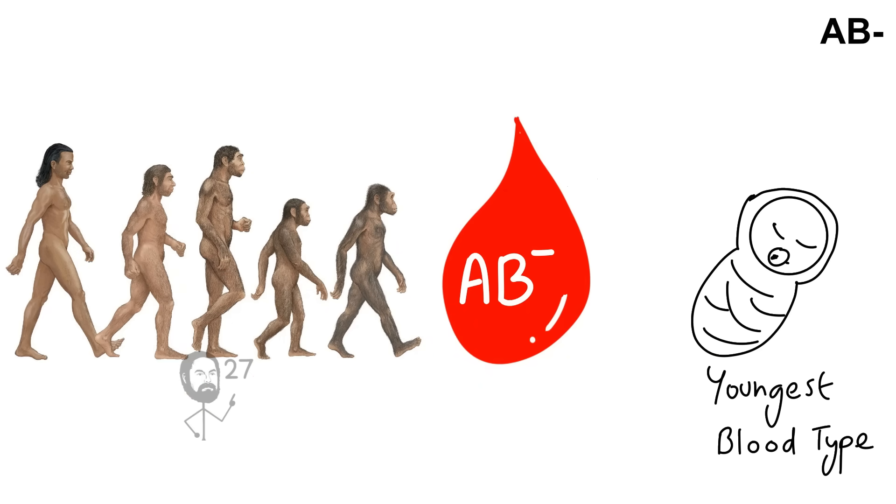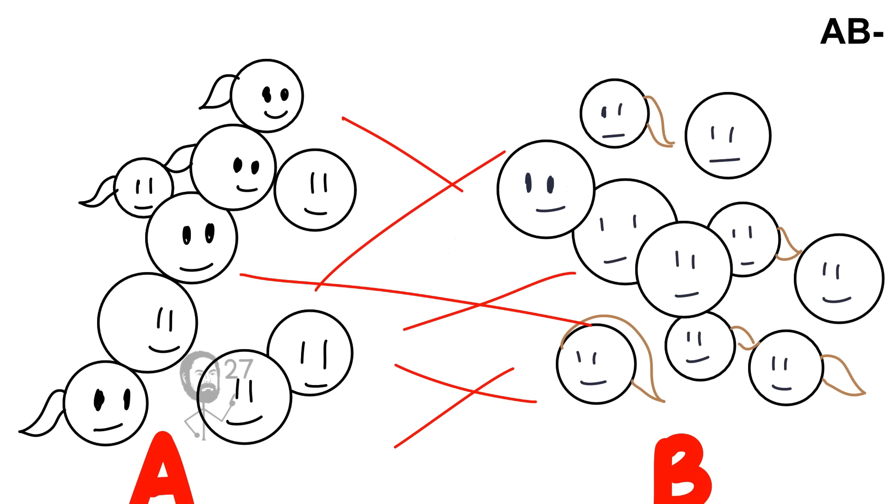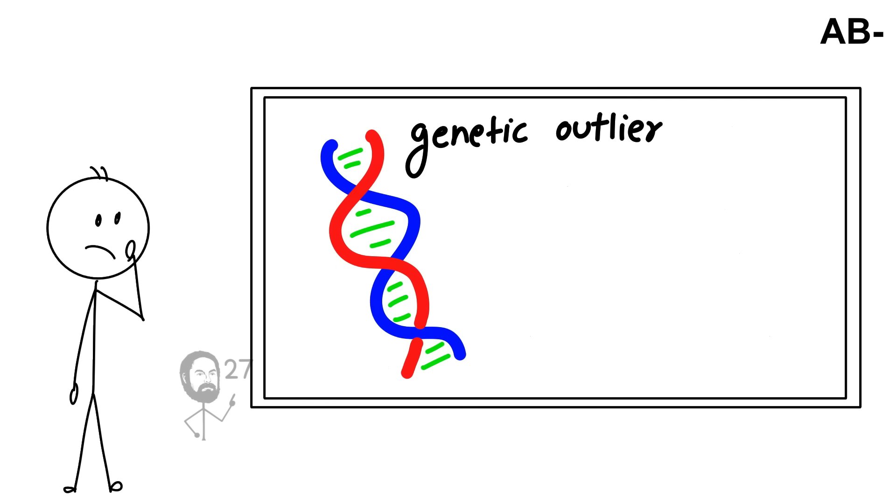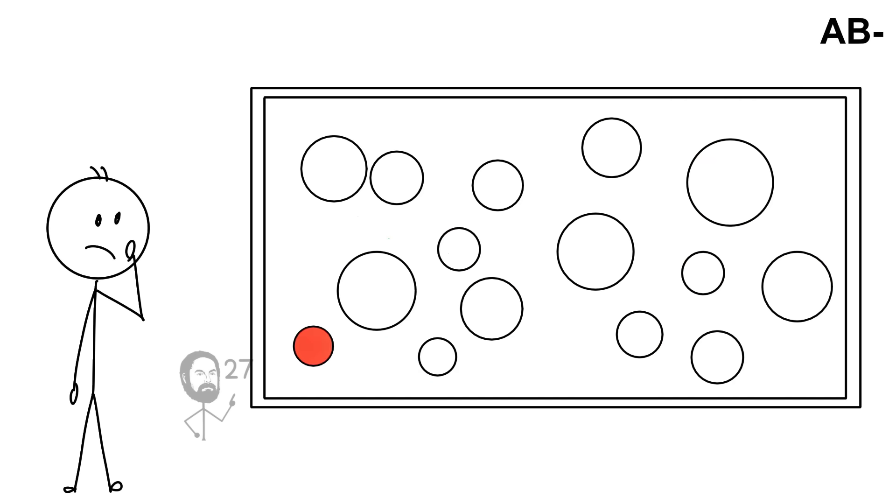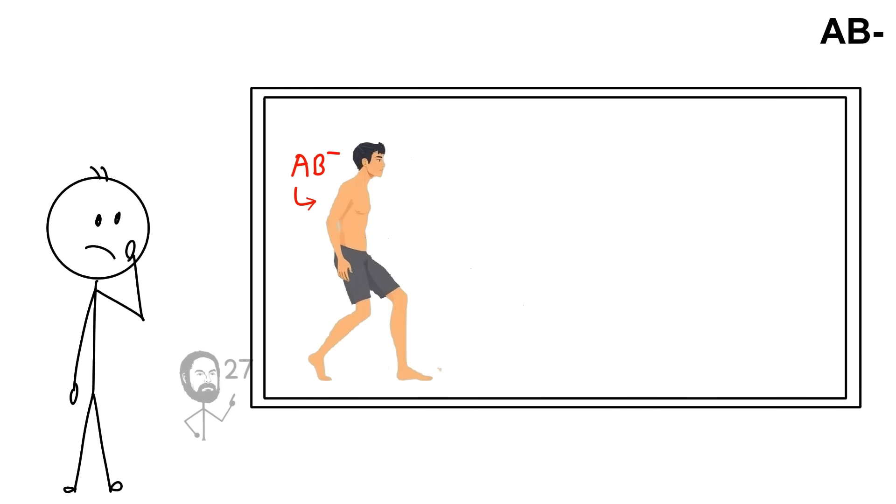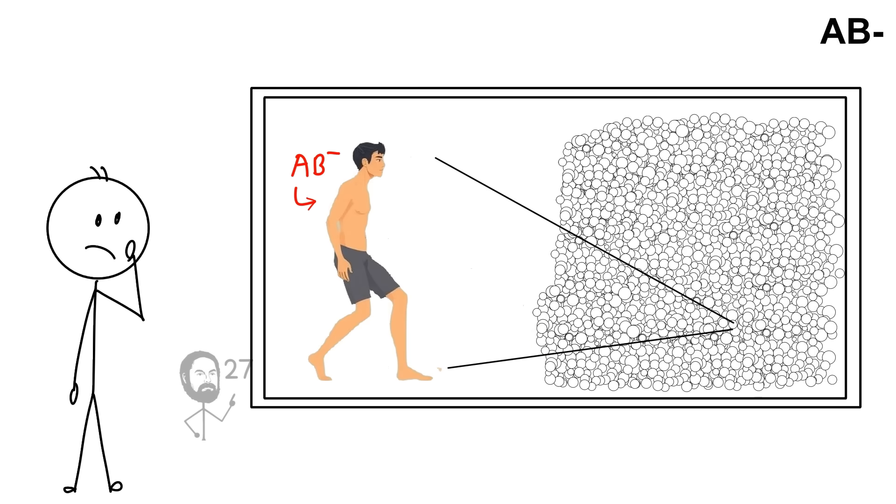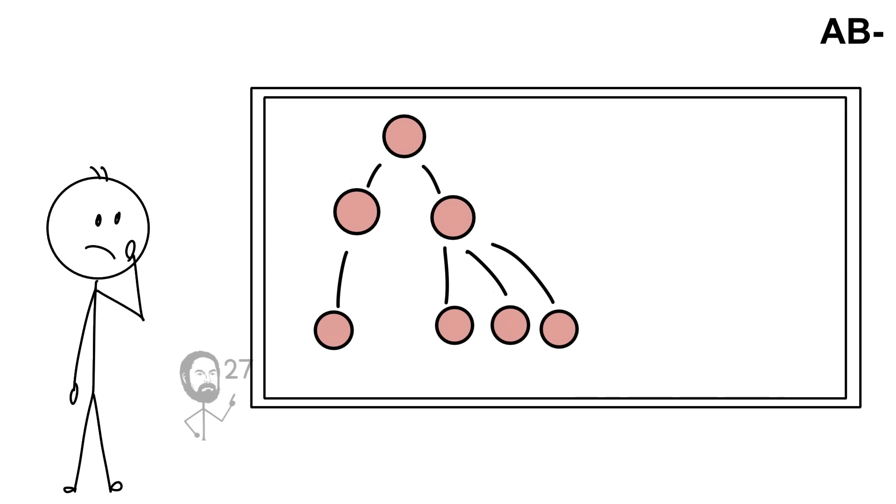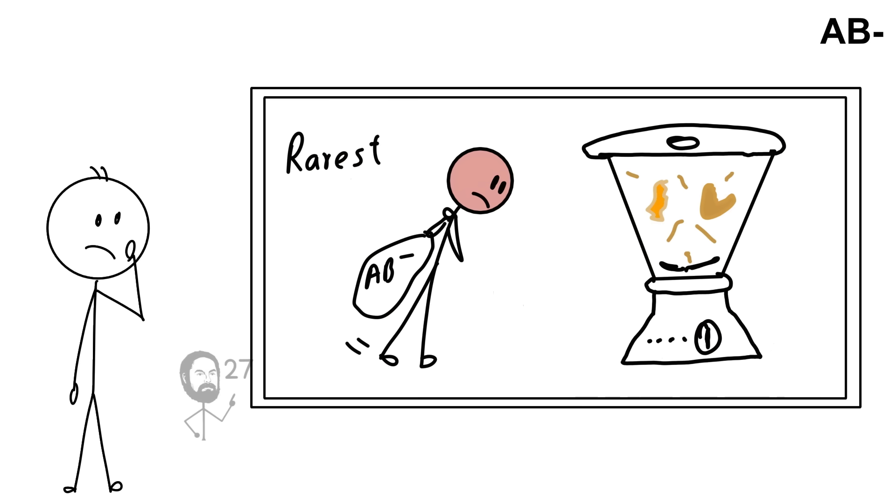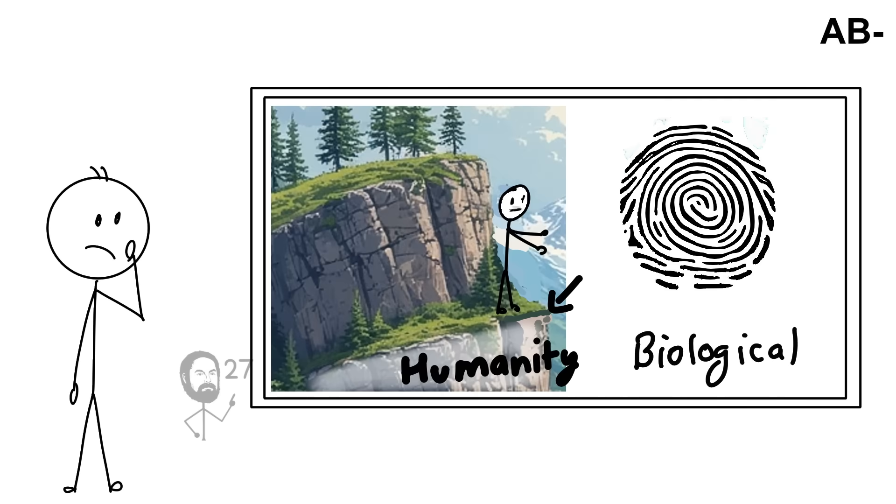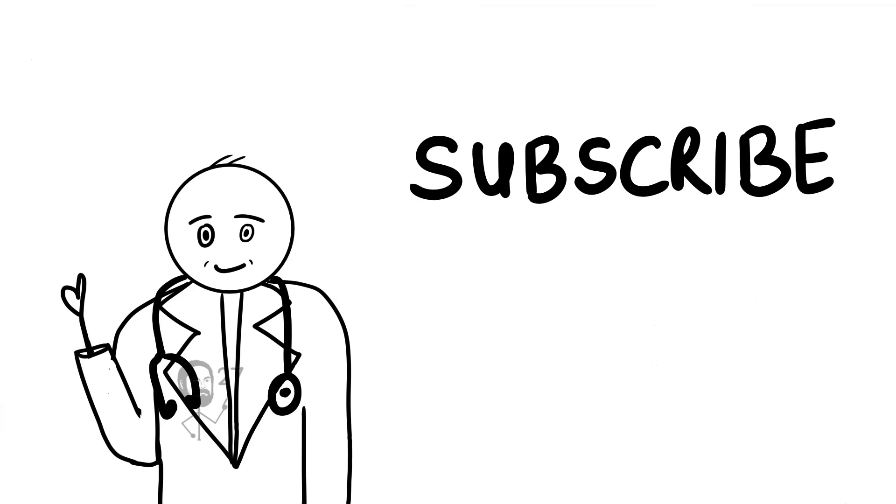From an evolutionary perspective, AB itself is the youngest blood type, thought to have arisen only a few thousand years ago from the mixing of A and B populations. The additional absence of RHD makes AB-negative even more exceptional, turning it into a genetic outlier across human populations. This rarity highlights both the diversity and fragility of blood type inheritance. AB-negative carriers represent a small fraction of humanity, yet hold uniquely important plasma for transfusion medicine. In terms of ancestry, possessing AB-negative is like carrying the rarest blend of all the major antigenic traits, a biological fingerprint that stands at the extreme edge of human variation.